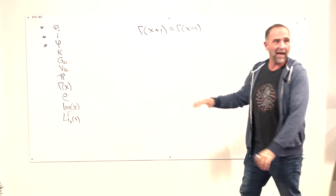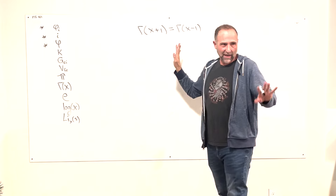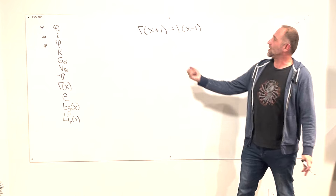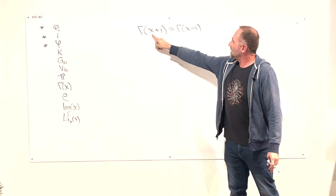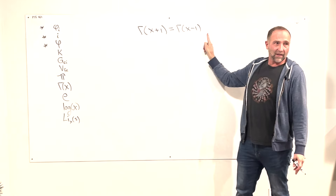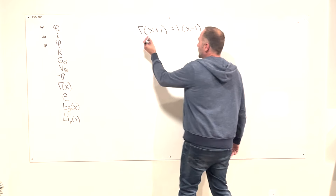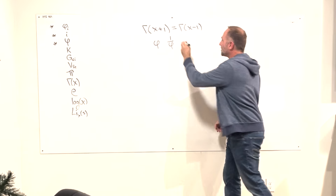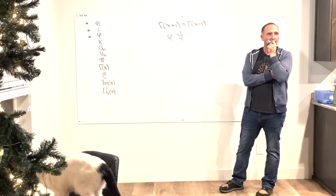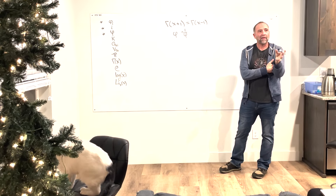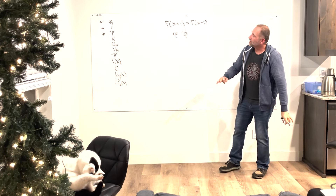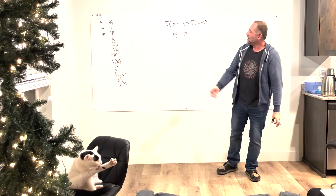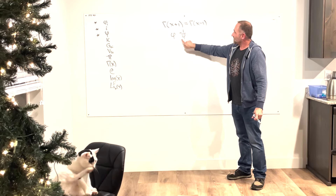We're imagining the gamma function set equal to another copy of itself and asking about traits inside it. Instead of trivially saying Γ = Γ, we separate the arguments and ask: is there an x that sits in a symmetric relation to one in the gamma function? It turns out there are two such x values, and these roots are built into how things partition.